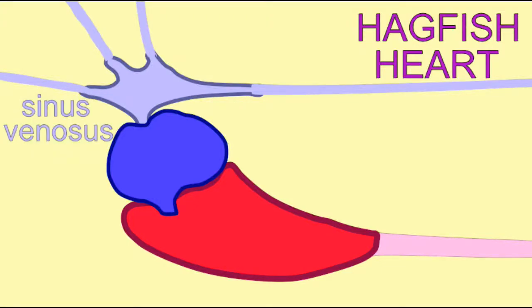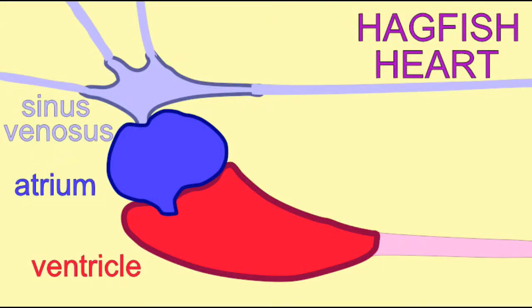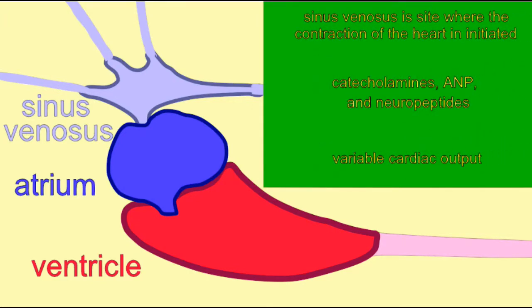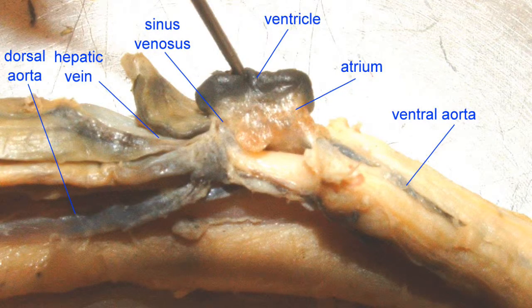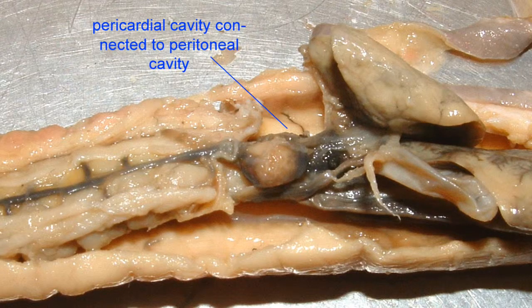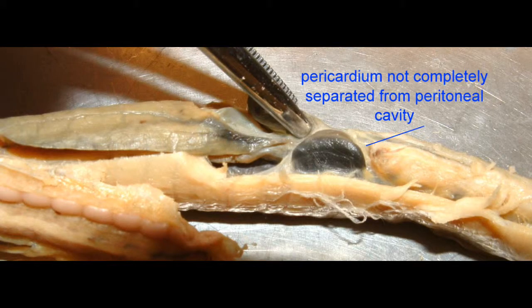As jawless fish, hagfish are among the most primitive fish and they possess more primitive features than do lampreys. Their heart possesses three chambers. Blood flows into the sinus venosus, where the autorhythmic fibers initiate the heartbeat, as in higher vertebrates, at least in embryos. From there into the single atrium, from there into the single ventricle. Hagfish have the primitive feature of their pericardial cavity not being completely isolated from the peritoneal cavity.